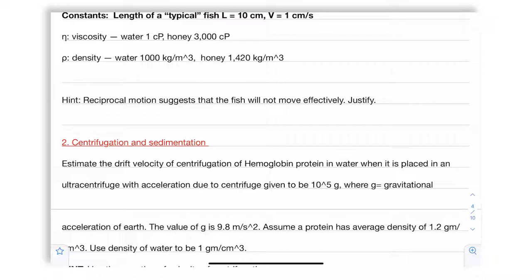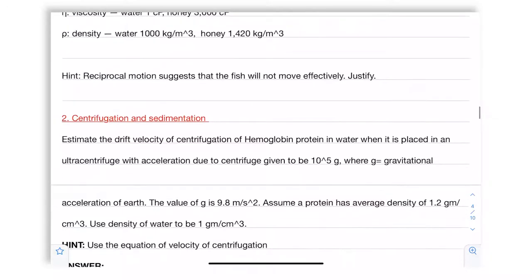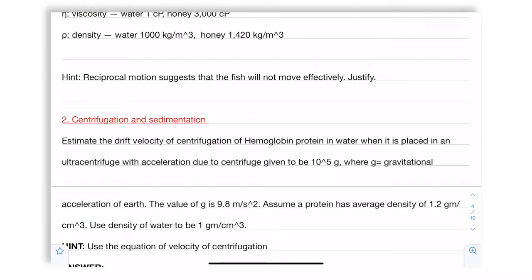And we are centrifuging it with acceleration due to centrifugation given by 10 to the power 5 G, which is 1 lakh G. That is 100,000 which is 0.1 million or 1 lakh. Now G over here stands for gravitational acceleration of Earth. As you all know the value of G is 9.8 meters per second square. So in other words the centrifugation acceleration is 9.8 times 10 to the power 5, approximately 10 to the power 6 meters per second square.